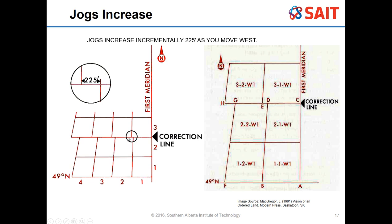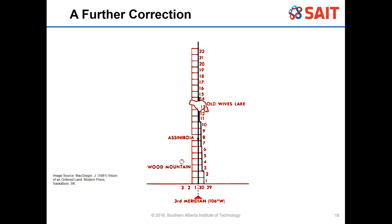We can see here the 49th parallel and then the correction line, then baseline, correction line, baseline, correction line continuing upward. There is a further correction that needs to happen - as we keep going up, for example at Old Wives Lake near the third meridian, at around Township 15 the line completely disappears and we have to adjust for that.